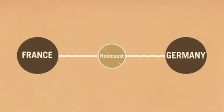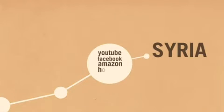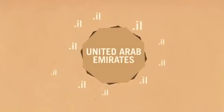For example, France and Germany filter sites that deny the Holocaust. Syria filters YouTube, Facebook, Amazon, Hotmail, and pro-Kurdish sites. United Arab Emirates filters sites ending in Israel's country code, .il.